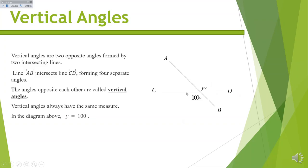Since we know that this angle is 100 degrees, then the vertical angle is also equal to 100 degrees. So Y is equal to 100.